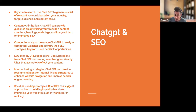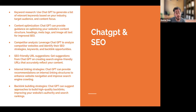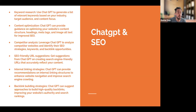What about our competitors? We can leverage ChatGPT for competitor analysis — it helps analyze our competitors' websites and identify their SEO strategies, keywords, and even backlink opportunities. Another main component of on-page SEO is putting together friendly URL suggestions. ChatGPT can suggest search engine friendly URLs that accurately reflect our content. For user experience, ChatGPT can provide recommendations on internal linking structures to enhance website navigation and improve search engine crawling.